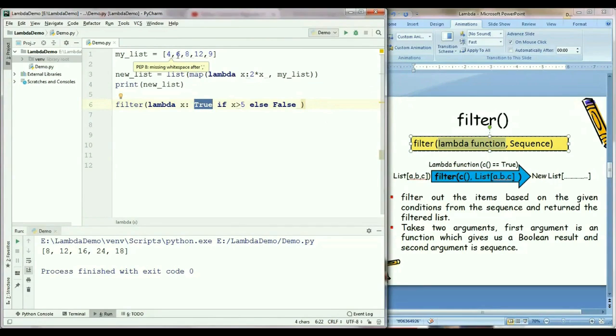This will check each and every element whether it is greater than 5 or not. If element value is greater than 5, it returns true otherwise it returns false. So this is our first argument of the filter function.